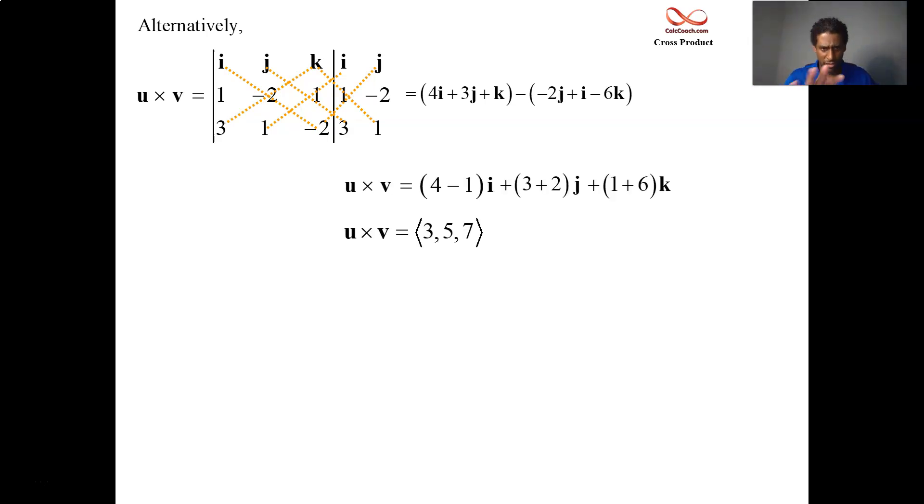I won't go through it, but here it is quickly. The shortcut is copy down column 1, column 2. Multiply along forward-facing diagonals. Subtract what you get by multiplying along backward-facing diagonals. And you'll have the same 3, 5, 7. Check it for yourself. I don't want this video to get too long, so I... But if you prefer that method, then look at it and pause it and work it out.